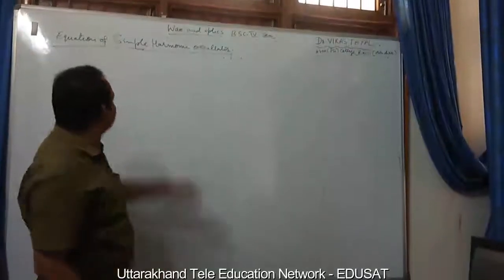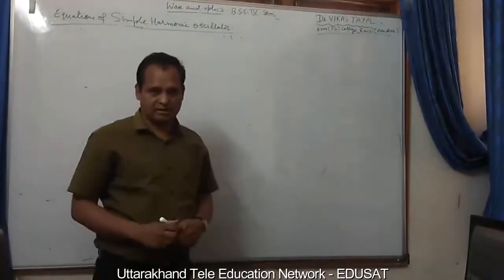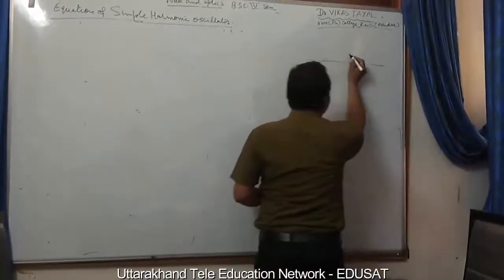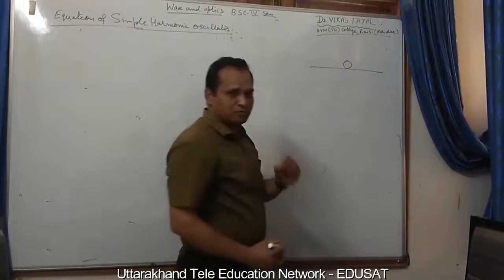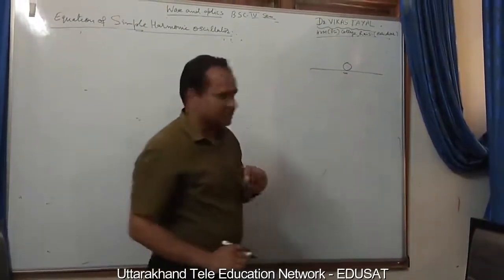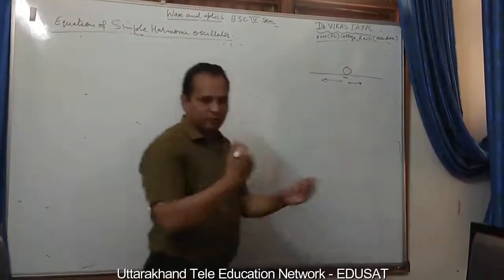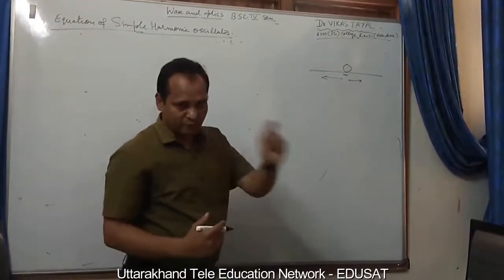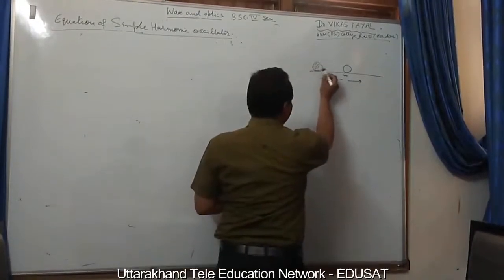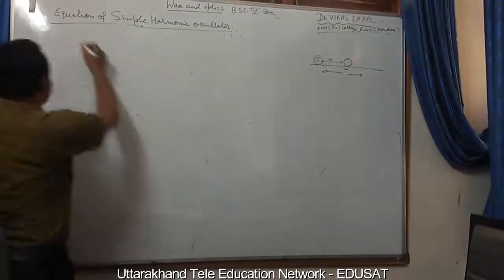Friends, today our topic is the equation of a simple harmonic oscillator. Here we will see that there is a body whose mass is M — a particle of mass M going to and fro about its mean position, meaning it executes simple harmonic motion. At any time, let its position be x.